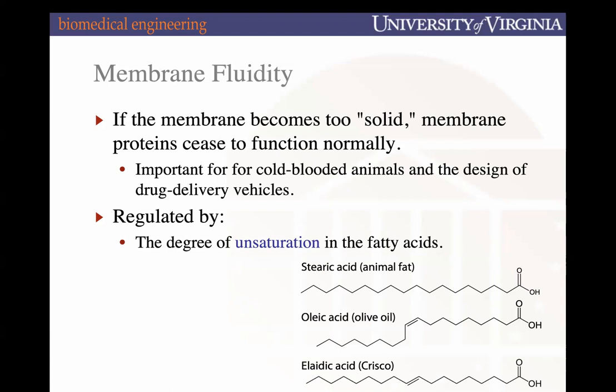Stearic acid is a saturated fatty acid — if that constituted our lipid bilayer it would have such a high degree of crystallinity it would not permit movement. However, fatty acids that are unsaturated and have double bonds — particularly ones that have a kink — enable that movement. There are two fatty acids with double bonds, but only one has a kink, and that's defined by whether the double bond is cis or trans. Cis double bonds have their hydrocarbon arms pointing in the same direction; trans have them pointing in opposite directions — and that determines the degree of crystallinity.